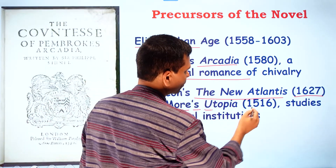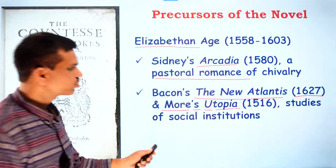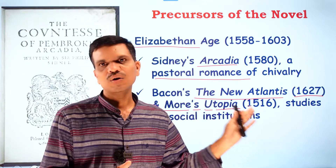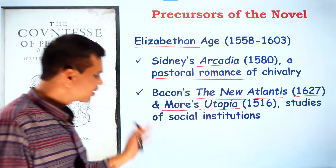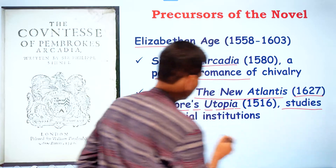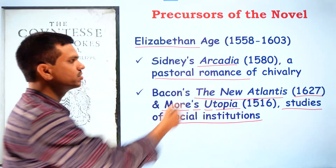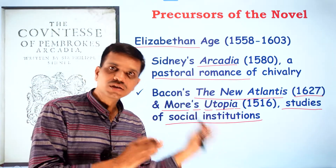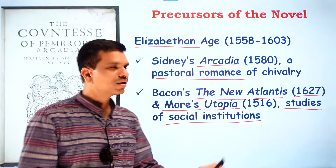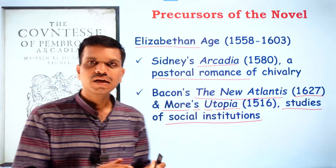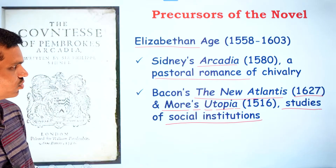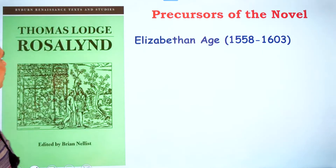We also have Francis Bacon's The New Atlantis, published in 1627, and Thomas More's Utopia, published in 1516. These are studies of social institutions — neither romances nor novels strictly, but studies of social structure. However, these works provided the background to the development of the novel and helped the novel emerge in a different form.